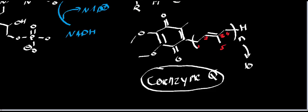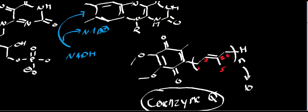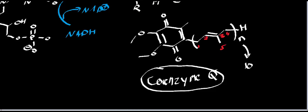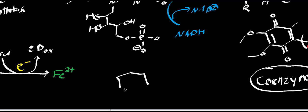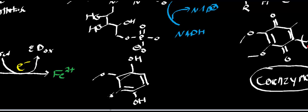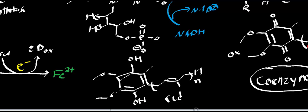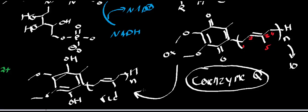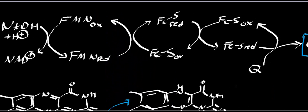What you notice about this molecule is it's very hydrophobic — if you extend the chain out, it's just a massive carbon chain. Once it picks up the electrons through the iron-sulfur center, it gets reduced to ubiquinol. So the oxidized form is ubiquinone, and that's the ultimate goal of NADH dehydrogenase, much like the other proteins.